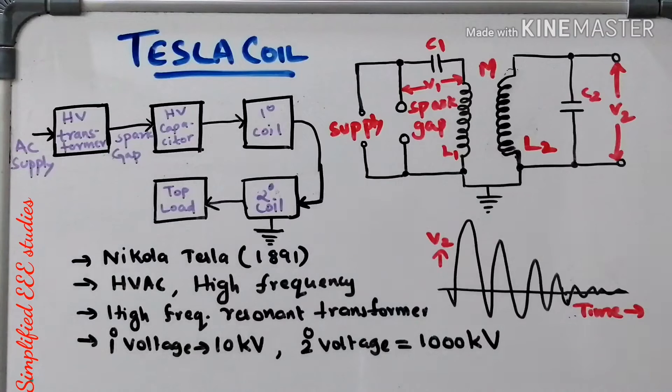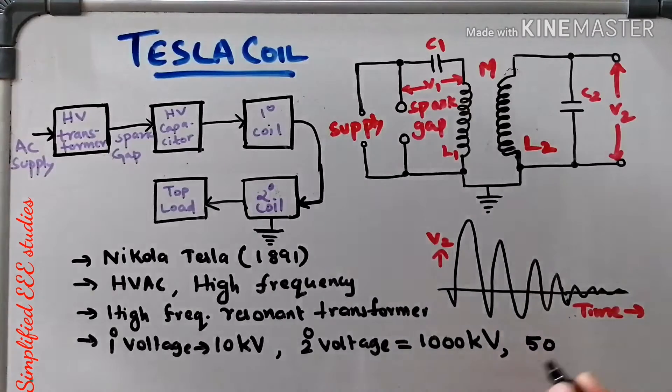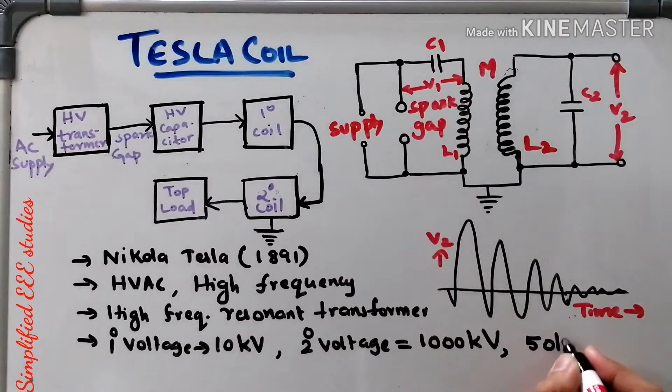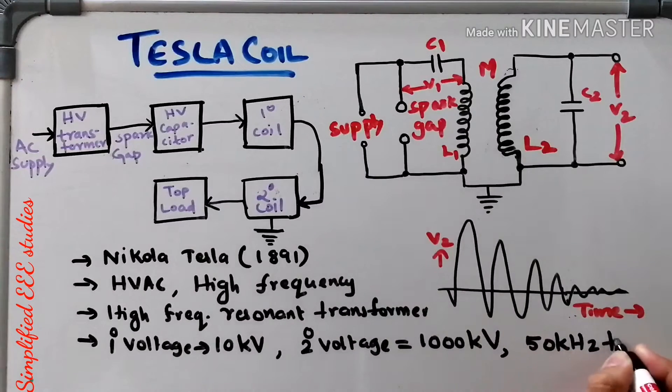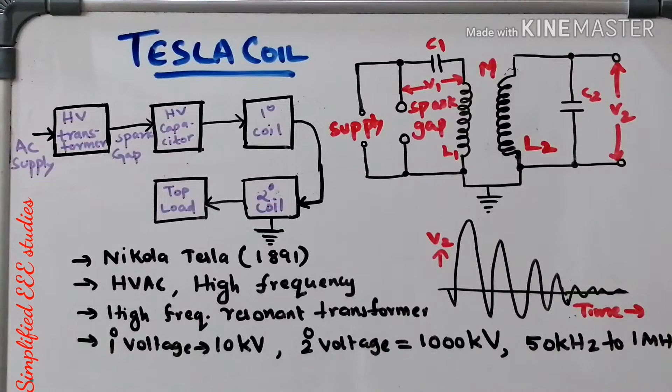In the frequency range of 50 kHz to 1 MHz. This much of frequency will be generated by using Tesla coil.